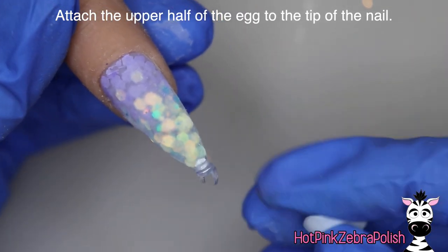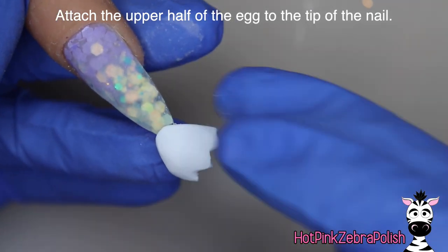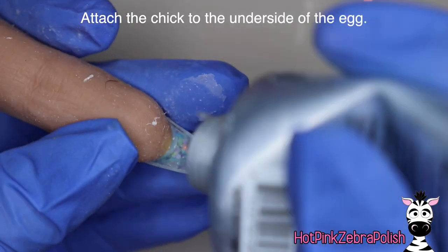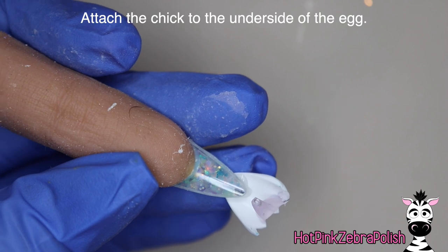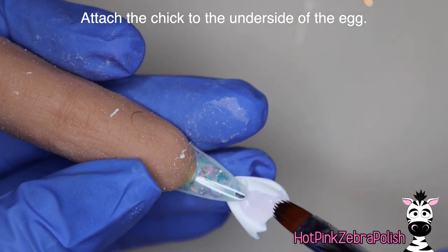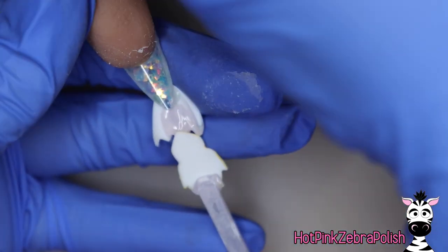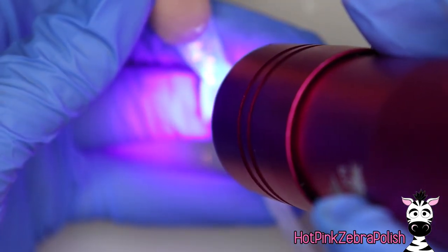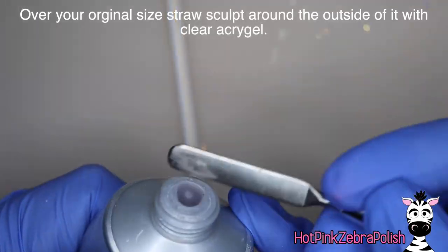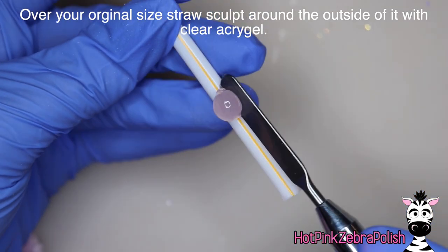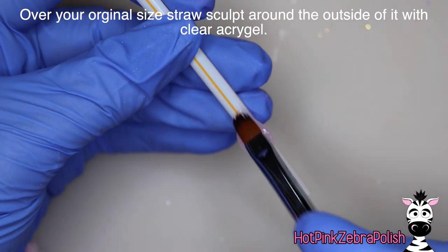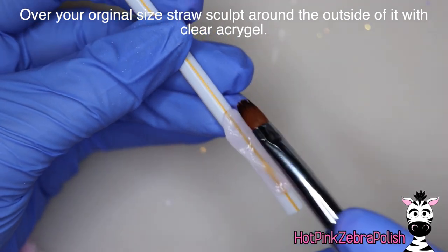So then after that we're going to adhere the top half of our little egg to the tip of the nail with more of that acrogel. Then I'm going to attach just the very tip of my chick's head to the underside of that top half of the egg. So you're going to apply more acrogel and then set the chick there and then flash cure this. It's very hard to transfer it to the lamp, to your big lamp, without giving it a little bit of a flash cure because it's going to wiggle all around.